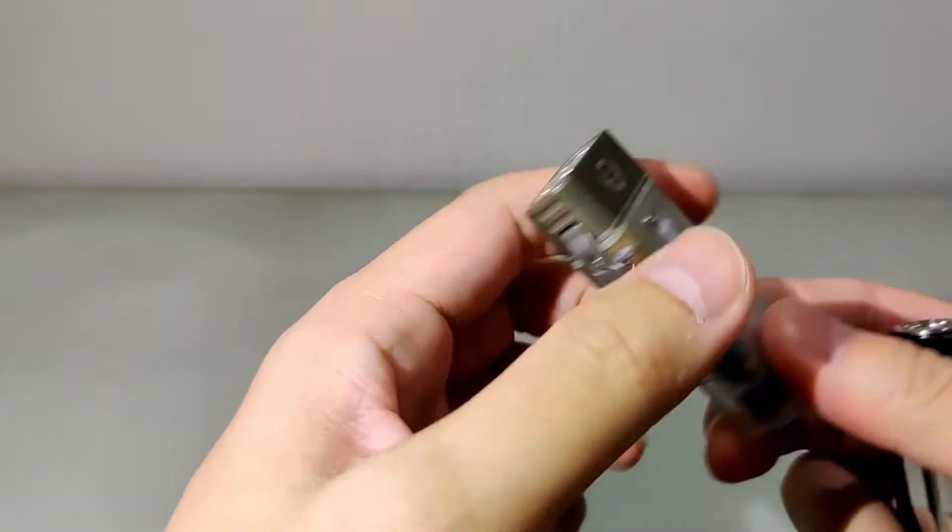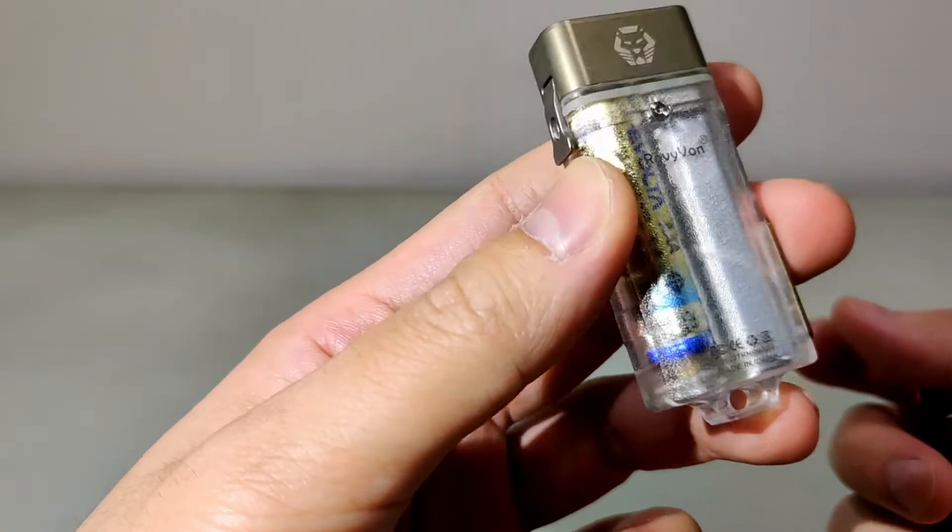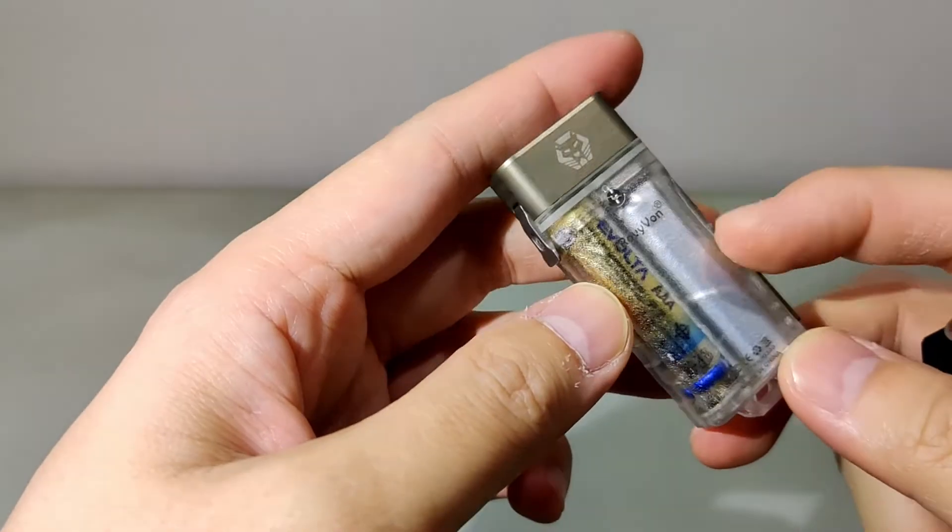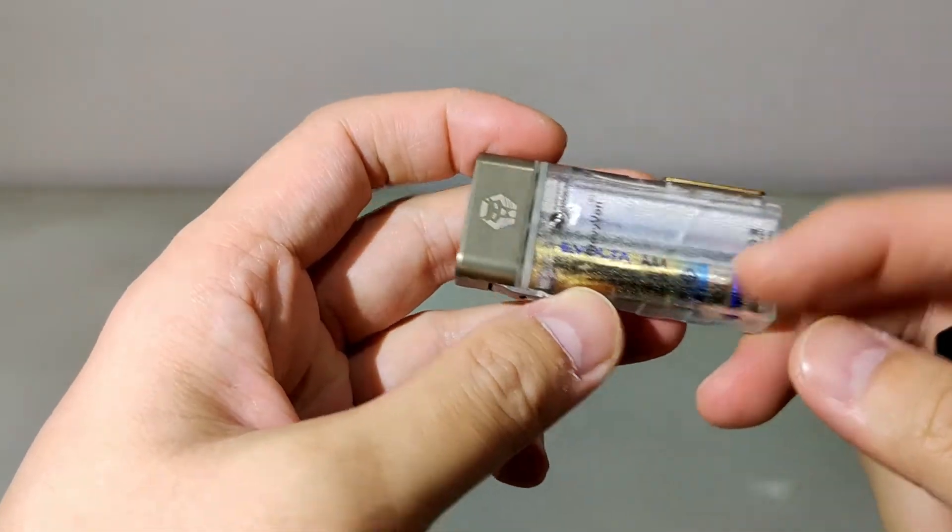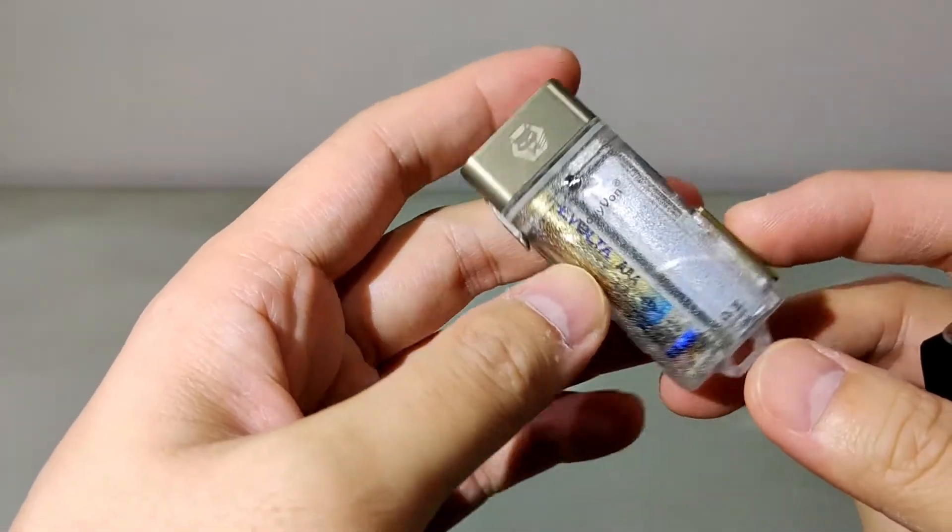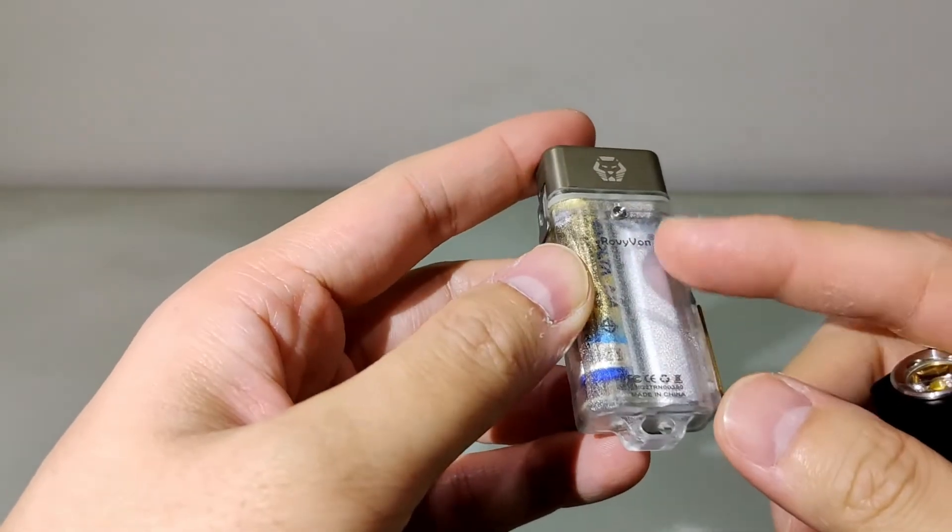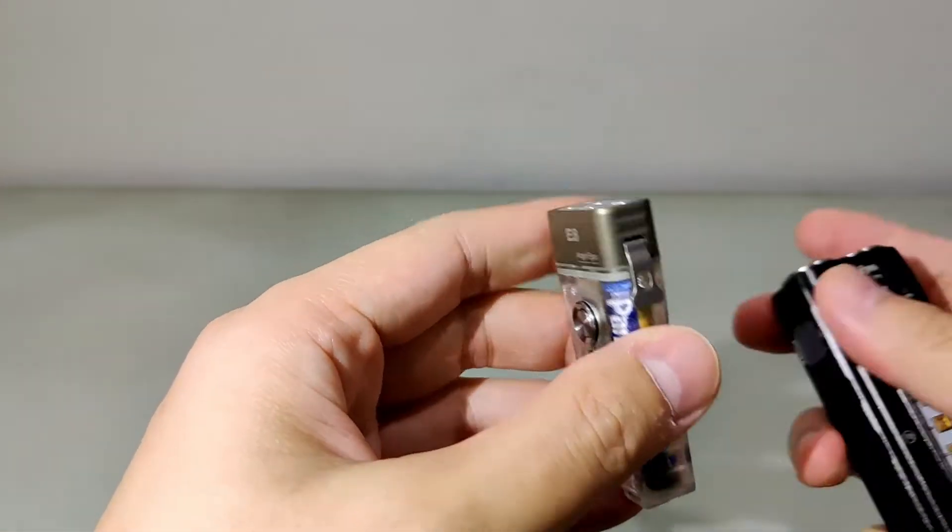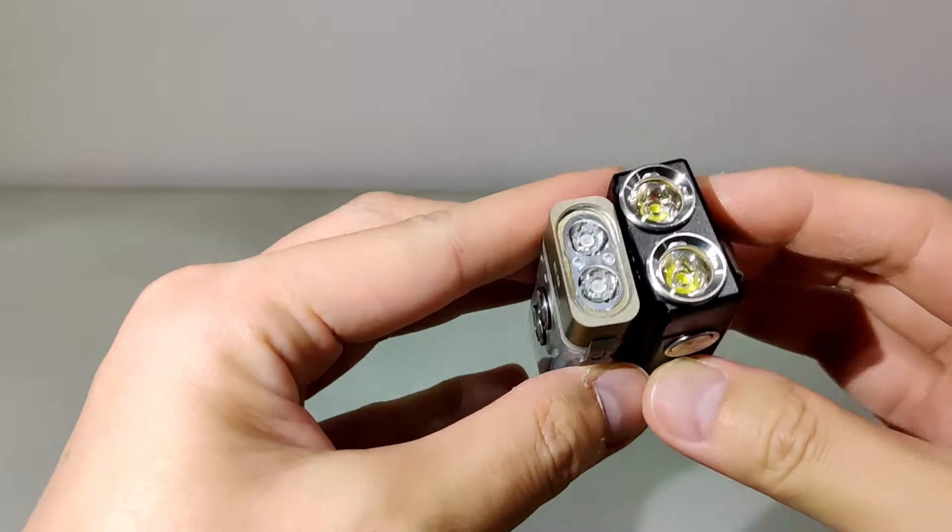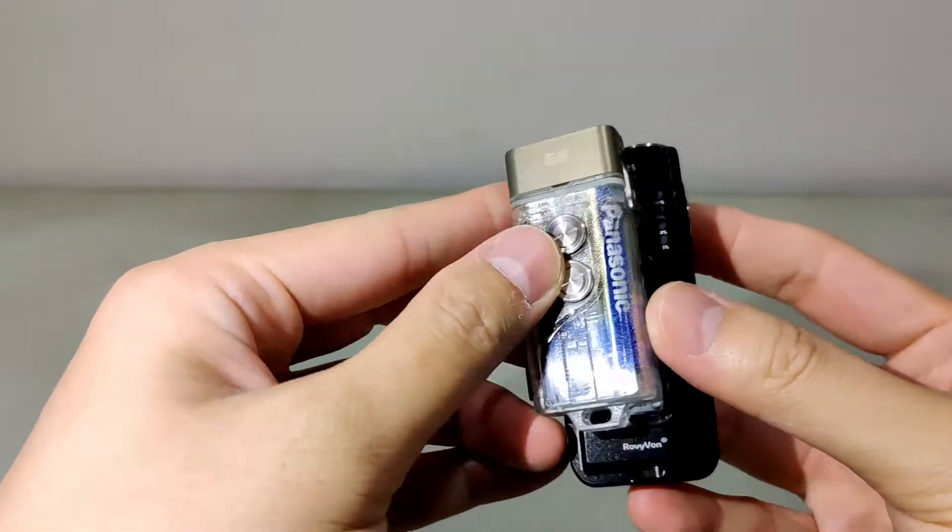It is my first hybrid dual power source light. As you can see, I already put the AAA inside and the silver one is the lithium battery. This is quite a bit bigger when compared to the new E8.